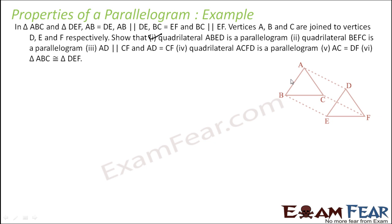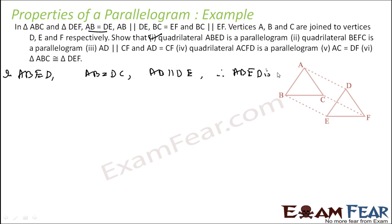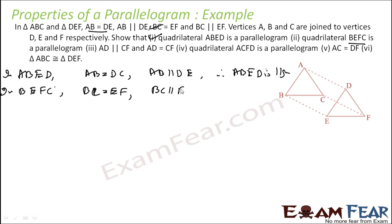In ABED, it is given that AB equals DE and AB is parallel to DE. Therefore ABED is a parallelogram. For quadrilateral BEFC, similarly BC equals EF and BC is parallel to EF, therefore BEFC is also a parallelogram.